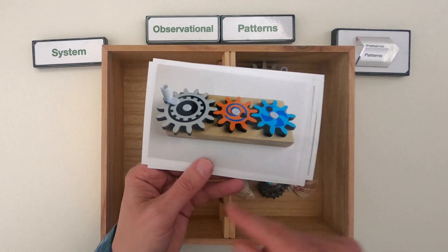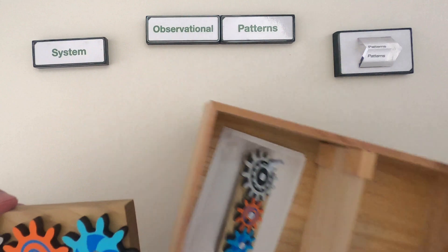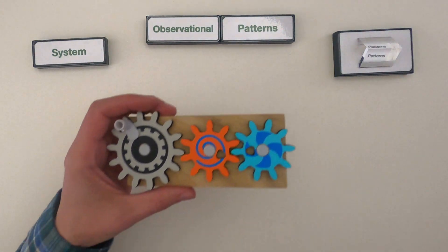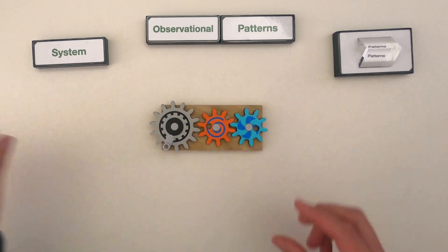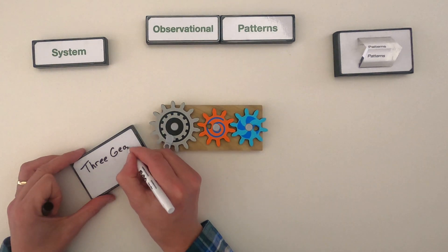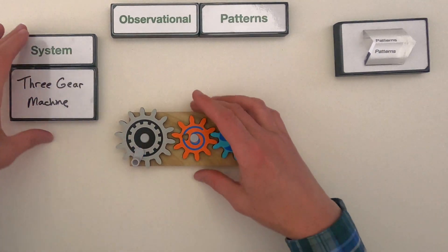I'm going to start by showing you my thinking as we look for patterns in this three-gear machine. So the first thing you should do with any kind of system is you should define the system. The system we're going to investigate is this three-gear machine.